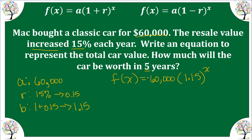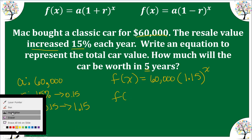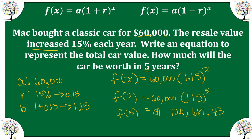Now we can answer the question: in five years, what is the total value? Using order of operations — 1.15 raised to the 5th times 60,000 — and since this is money, we get $120,681.43. You can see that in five years, the car has almost doubled; in fact it has just over doubled in five years.